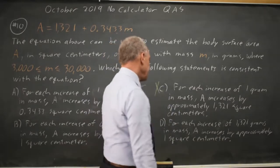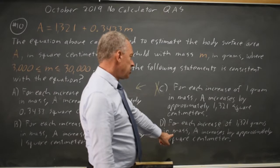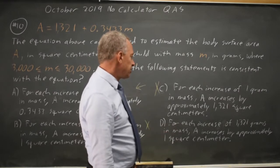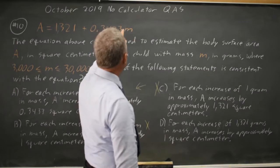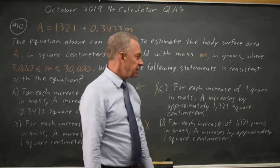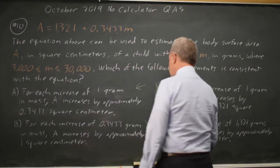And D, M goes up by 1321, A goes up by 1, but if M goes up by 1321, A goes up by 0.3433 times that, which is several hundred, not just 1, so D is not correct.